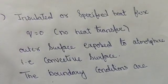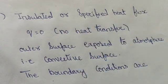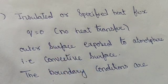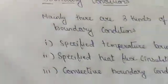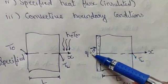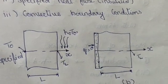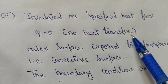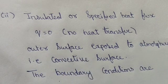The second type is the insulated or specified heat flux boundary condition. Here, the heat flux q equals zero. Looking at figure B, the insulated part has zero heat flux at that point because it is insulated — therefore q equals zero, meaning no heat transfer.